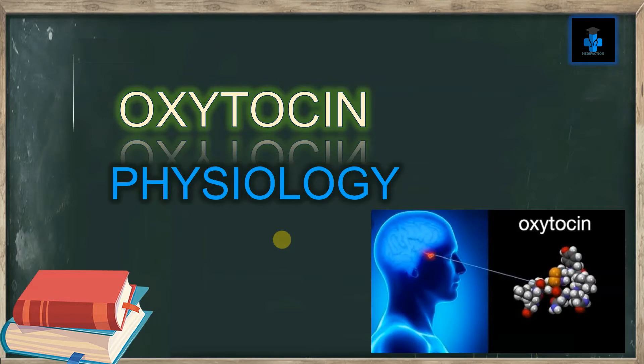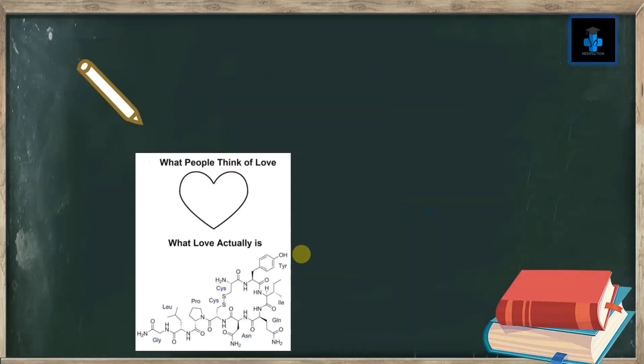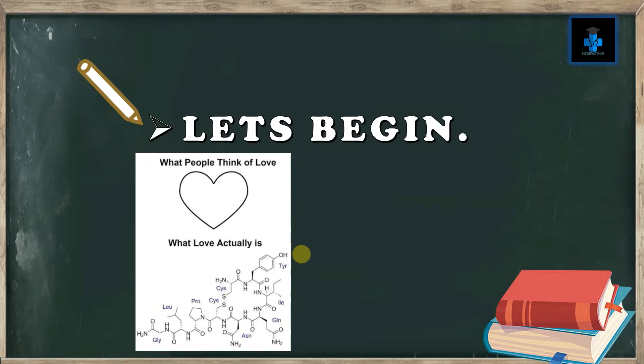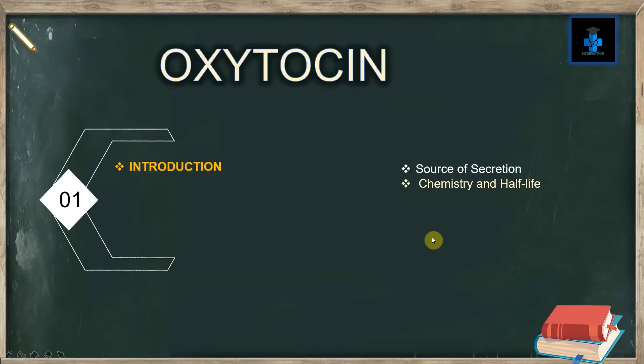Welcome to Medifaction. Today we will learn about the physiology of oxytocin. Oxytocin is a hormone that acts on organs in the body and as a chemical messenger in the brain, controlling key aspects of the reproductive system including childbirth and lactation, and aspects of human behavior.